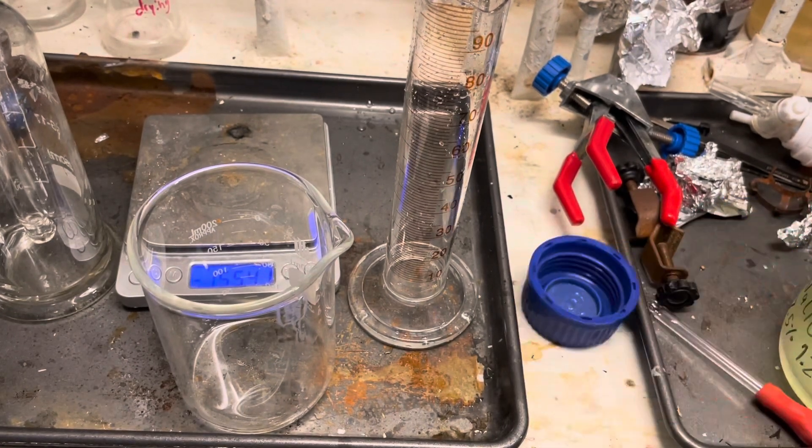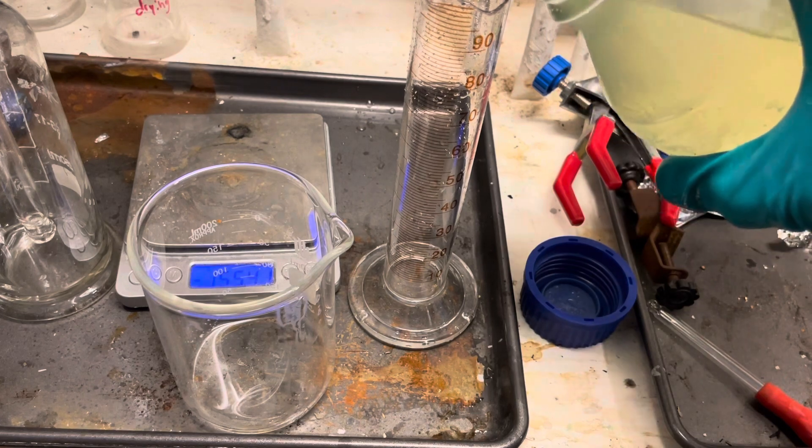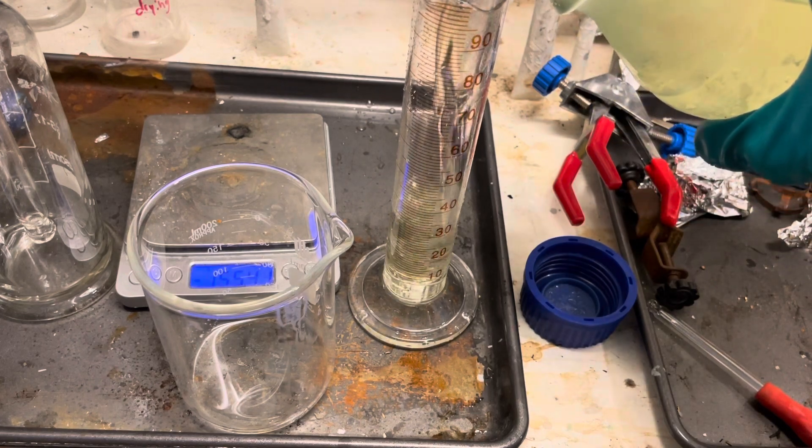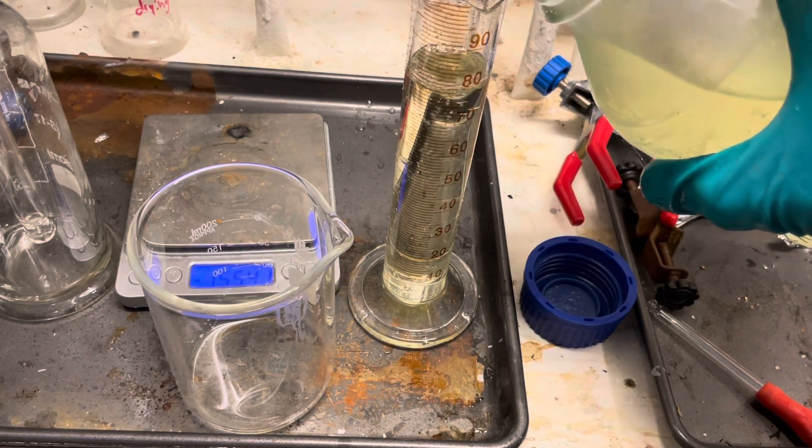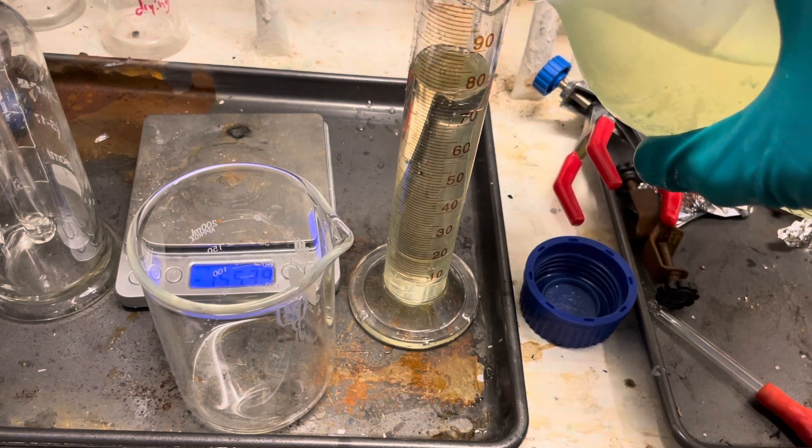For titrating, we're just going to use a random amount of bleach and put it in a graduated cylinder. We're simply going to pipette in bleach until we stop seeing nitrogen gas forming, very simple, and we'll record down how much bleach was used.